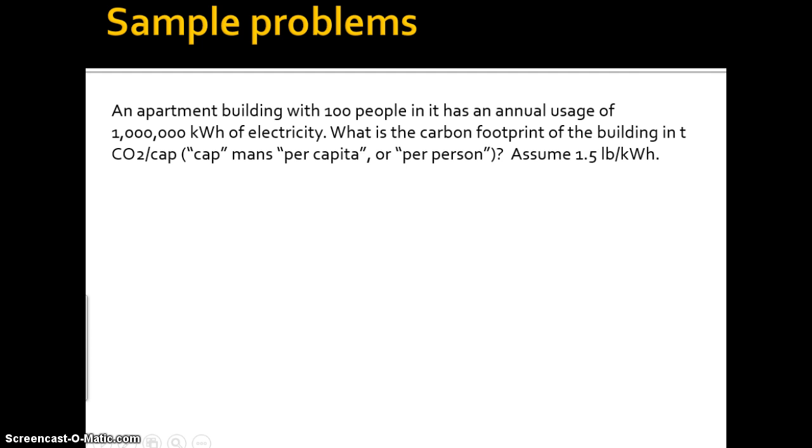So let's move on to the next problem. All right, an apartment building. So I'll let you read this. I'm not going to read through it all. So now we're dealing with per capita. So we have a million kilowatt hours of electricity. So we have tons of CO2 per capita, assuming 1.5 pounds per kilowatt hour. So we have 1 times 10 to the 6th kilowatt hour. Times 1.5 pounds per kilowatt hour. And then we have 1 ton is 2,000 pounds.